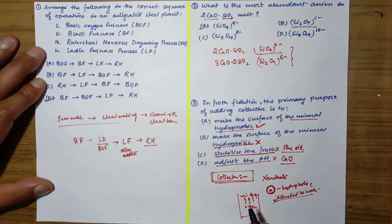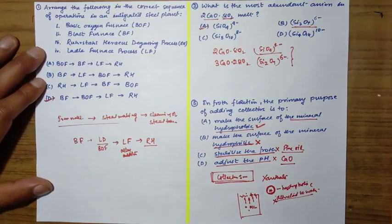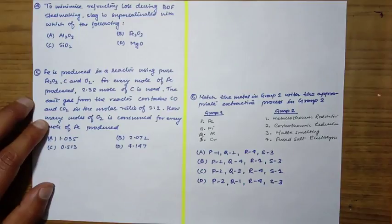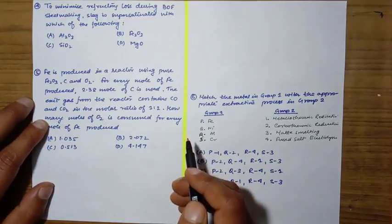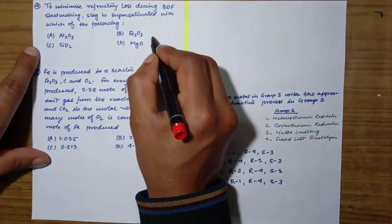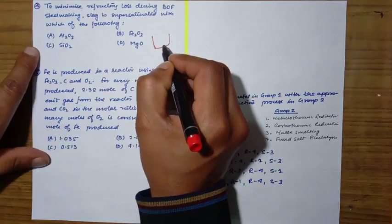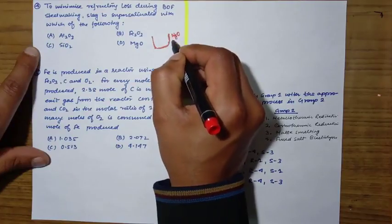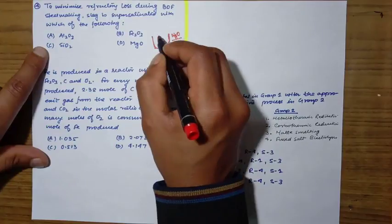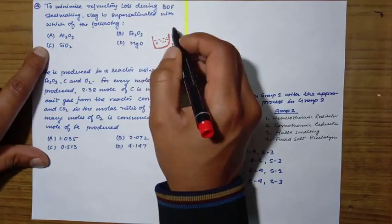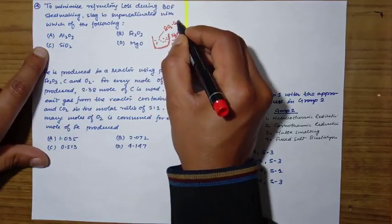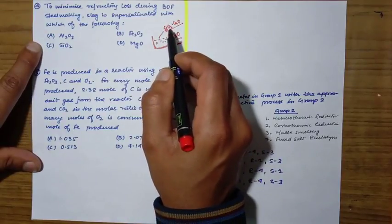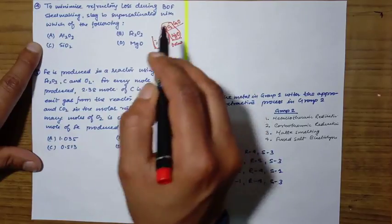Next question: to minimize refractory loss during BOF steelmaking, slag is supersaturated with which of the following? During BOF process, the lining is lined with MgO, that is dolomite. The slag mainly contains SiO2 and CaO.